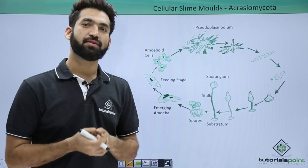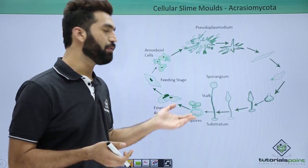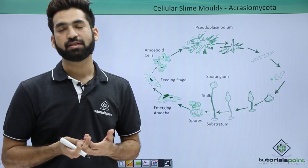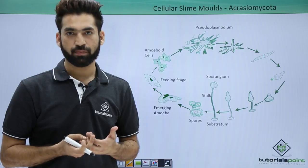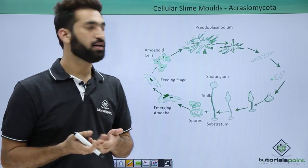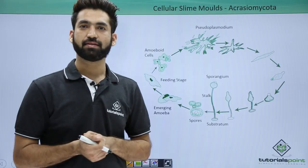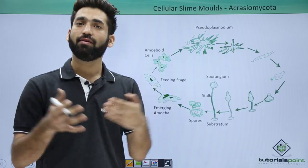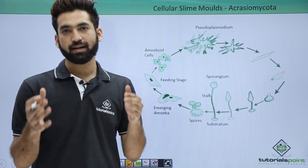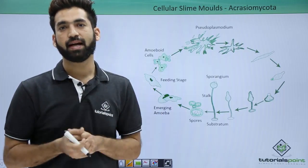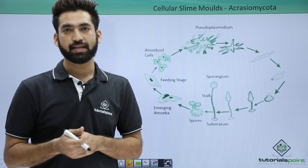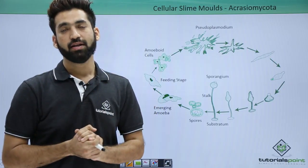In cellular slime molds, the spore after germination will produce gametes called amoeboid cells. These amoeboid cells are unicellular, and they release a chemical called acrasin. Acrasin works as a signal for other amoeboid cells, bringing them together.